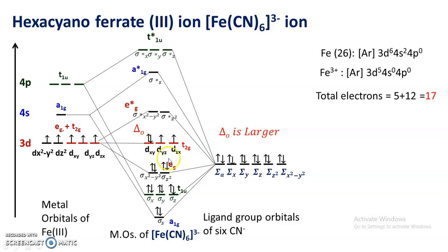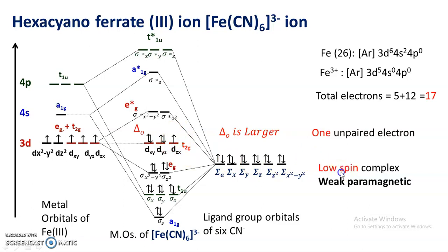The 17th electron is also filled, completing the 17-electron filling. There is one unpaired electron in this complex. Because of this one unpaired electron, the complex is weakly paramagnetic. Therefore, hexacyanoferrate(III) ion is a low-spin complex and is weakly paramagnetic.